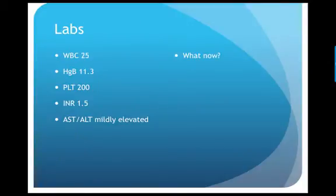His labs show a white count of 25, hemoglobin of 11, platelet count of 200, and INR of 1.5. His AST and ALT are minimally elevated. So what would be the next best step?